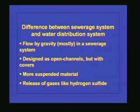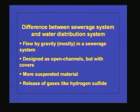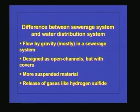Before going to the design, we will discuss the main difference between a sewerage system and a water distribution system. In a water distribution system, water can flow either by gravity or by pressure — the pipes flow full under pressure even without pumps. Whereas in a sewerage system, the flow conditions are free surface flow conditions. A sewer system, even if covered, should not be operated under surcharge or pressurized conditions. Flow is by gravity in a sewerage system, which is why sewers are designed as open channels but with covers.